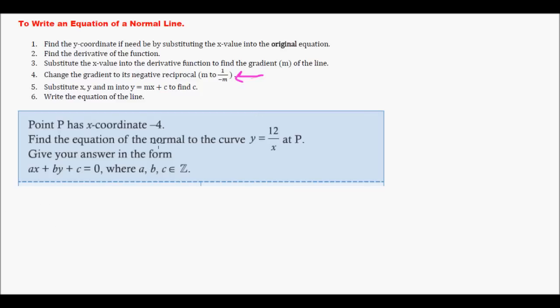Find the equation of the normal to the curve y equals 12 over x at P. Give your answer in the form ax plus by plus c equals 0. This is a different form, so we're going to have to do a little bit of moving around at the end. Find y first. So y equals 12 over negative 4, that equals negative 3. So we have our point now, negative 4 and negative 3.